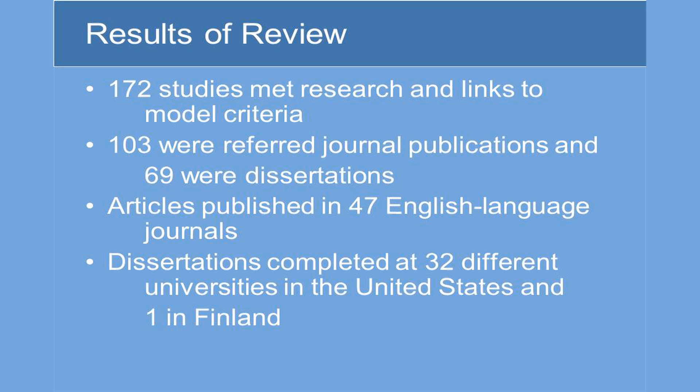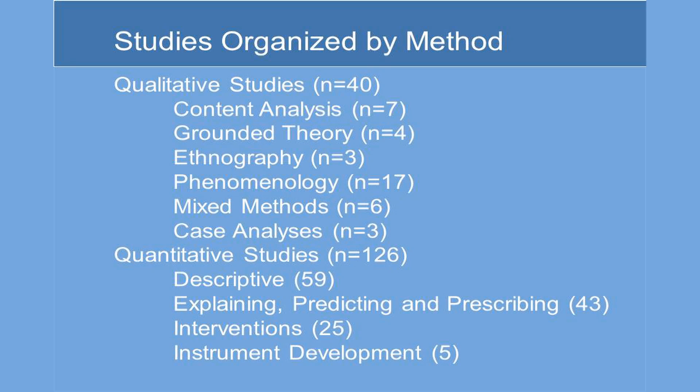103 were in refereed journal publications and 69 were dissertations. Articles were published in 47 English-speaking journals. Dissertations were completed at 32 different universities in the United States and one in Finland in English. Studies were organized primarily by method. Qualitative studies totaled 40: content analysis (7), grounded theory (4), ethnography (3), and phenomenology (17). Mixed methods yielded 6 studies and case analysis 3. Quantitative studies totaled 126: descriptive quantitative (59), studies that explain, predict, and prescribe (43), interventions (25), and instrument development (5).